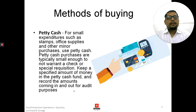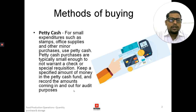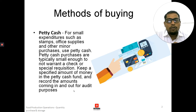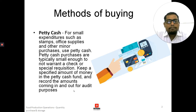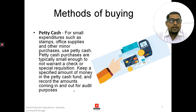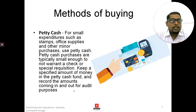The first method that a company or organization generally uses to buy or purchase is petty cash. For small expenditures such as stamps, office supplies, and other minor purchases, petty cash is used. Petty cash purchases are typically small enough to not warrant a cheque or a special requisition.